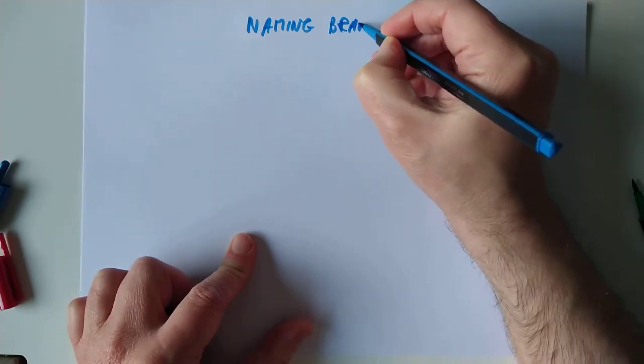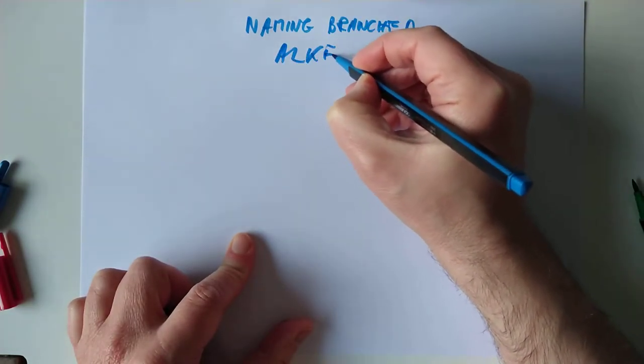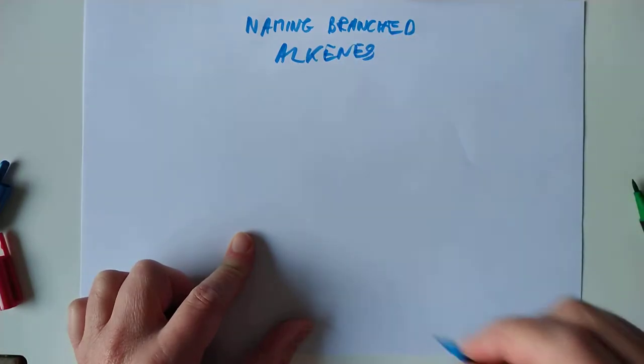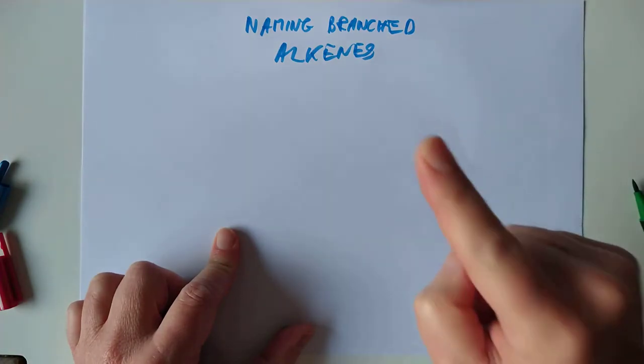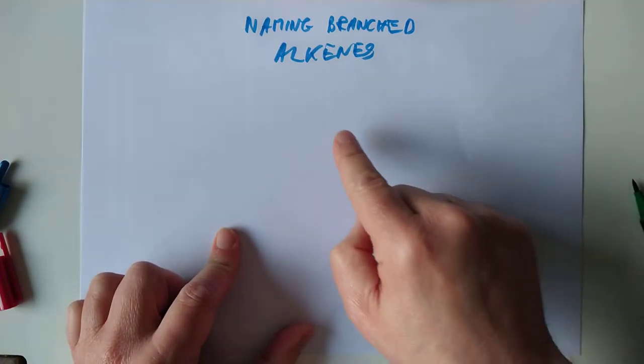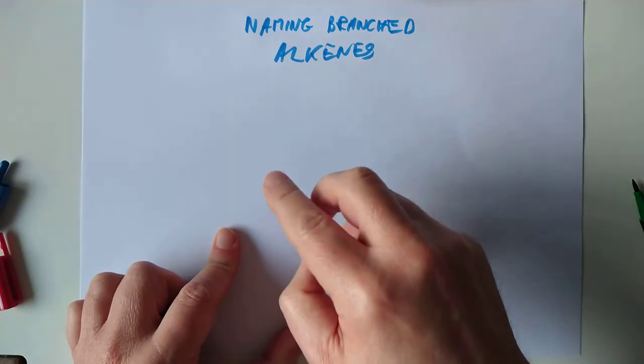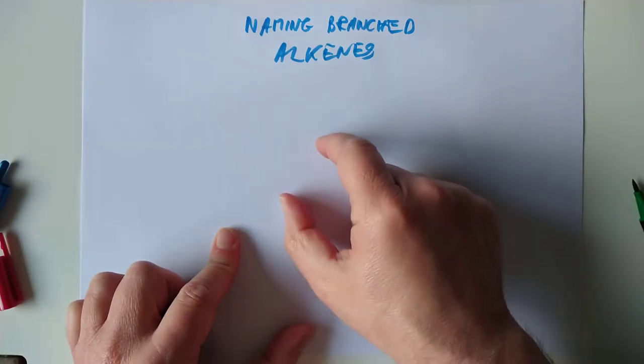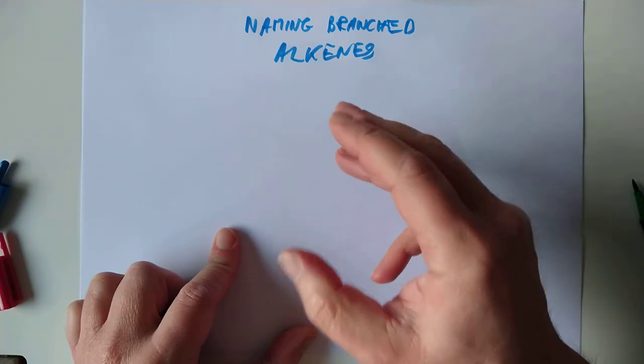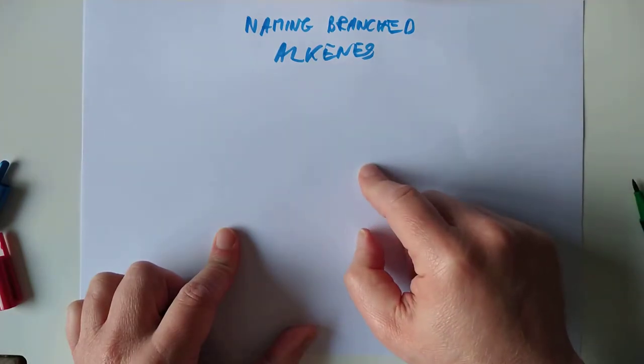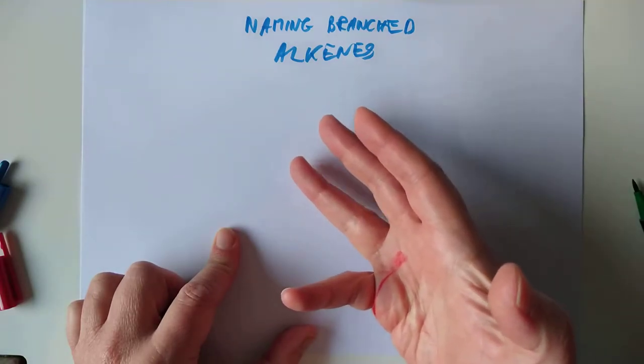So naming branched alkenes. A quick recap of how to name a branched alkane. You found the longest continuous chain of carbons, that was your basic skeleton. Second, you identified the branch on that skeleton. You numbered the main skeleton from whichever end was nearest the branch. And then the size of the branch is just meth-eth-prop or whatever with Y-L on the end. So methyl-ethyl-propyl. So you'd have like, for example, 2-methyl-pentane.